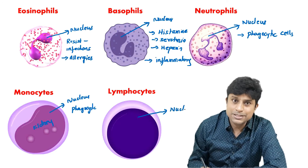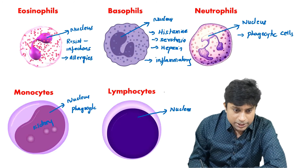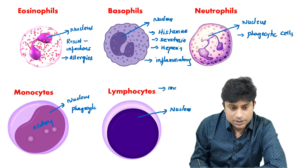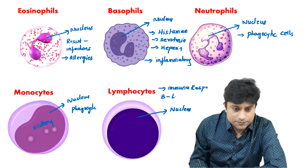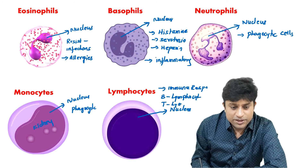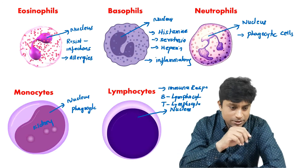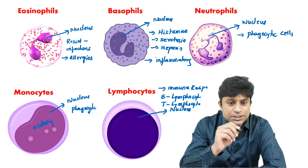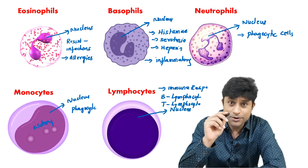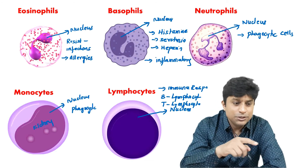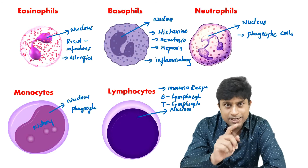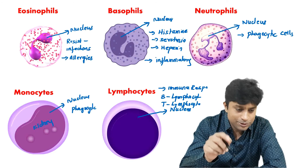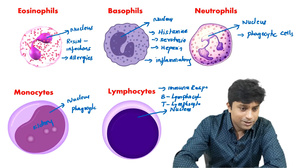Lymphocytes have a large nucleus that completely occupies the cell. Lymphocytes are responsible for immune responses and are of two types: B lymphocytes, which produce antibodies, and T lymphocytes, which help in production of antibodies. Monocytes and lymphocytes are agranulocytes — cytoplasm has no protein granules and the nucleus is single and large.